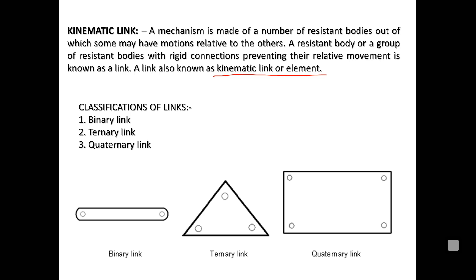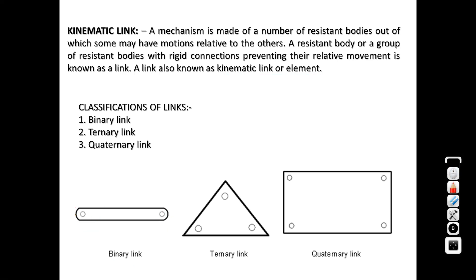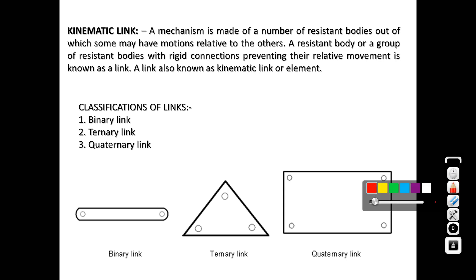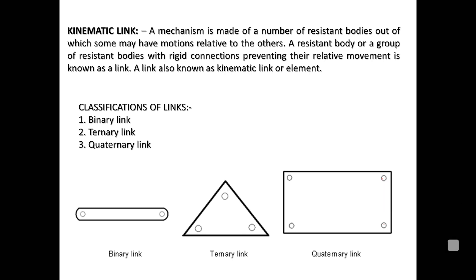Classification of links: binary, ternary, and quaternary, depending on their nodes. A binary link has two nodes, a ternary link has three nodes, and a quaternary link has four nodes. So the basic definition of a kinematic link is a rigid resistant body or rigid connection between resistant bodies — also called a kinematic element.